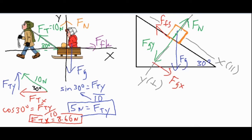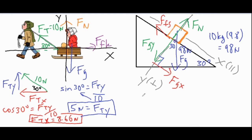Say we have a 10 kg object — multiplying mass by g gives the force of gravity, so fg = 98 newtons, which is our hypotenuse. The 30-degree angle translates into this right triangle. For fgy, which is adjacent to the 30-degree angle, we use cosine: fgy / 98 = cos(30°), giving fgy = 84.87 newtons.